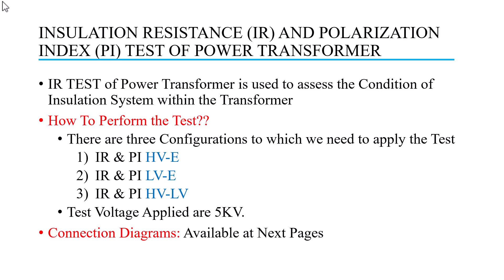The steps of how to perform the IR test involve three configurations. The first is high voltage to earth. As you know, transformers mostly have two windings, but some also have three windings. For our test case, I am considering a transformer with two windings: one high voltage and one low voltage. The three configurations are: HV to earth, LV to earth, and HV to LV.